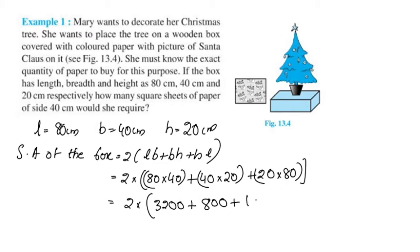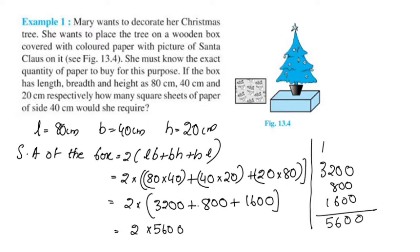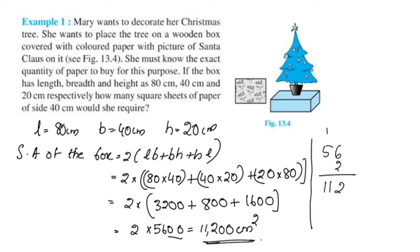This is equal to 2 into 3200 plus 800 plus 1600. 2 into 5600 is 11,200 centimeter square. This is 11,200 centimeter square.